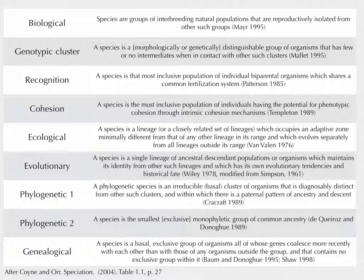This doesn't deal with asexual species — things like most bacteria, or those lizards, or various fish that are asexual. What people do there is say, well, these things seem different enough, or these things are evolving as a group being selected on as a population. They might just use rules of thumb: if they differ by less than 5% at 16S, they're a species.